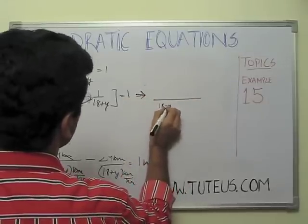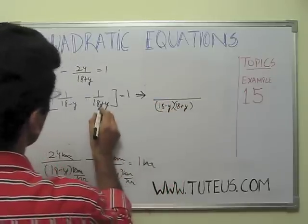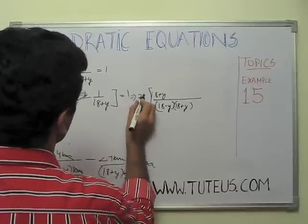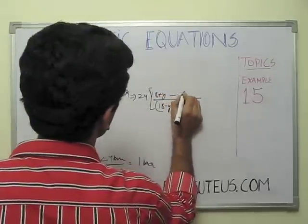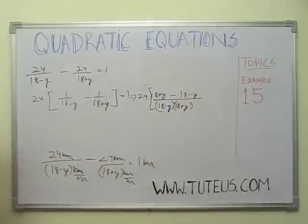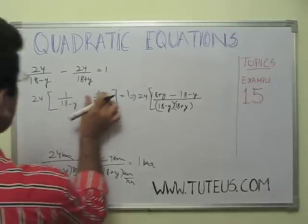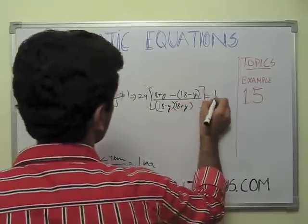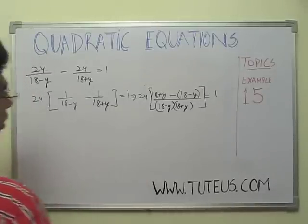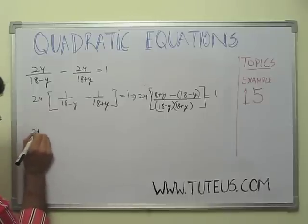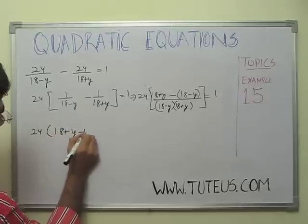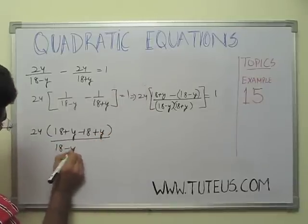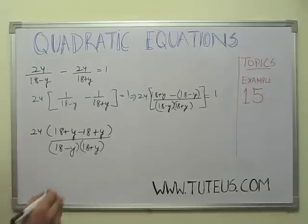Expanding the numerator carefully — the bracket changes signs — so it becomes 24(18 plus y minus 18 plus y) over (18 minus y)(18 plus y) equals 1. That simplifies to 24 times 2y over (18 minus y)(18 plus y) equals 1, giving us 48y equals (18 minus y)(18 plus y).